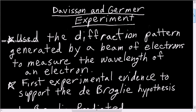The Davisson and Germer experiment used a beam of electrons to generate a diffraction pattern. And with that diffraction pattern, they were able to measure the wavelength of an electron.